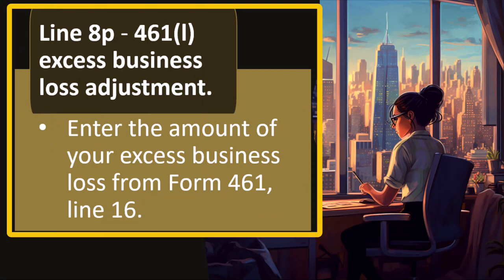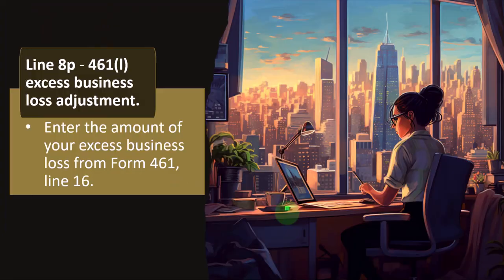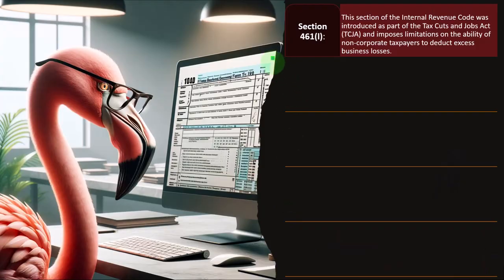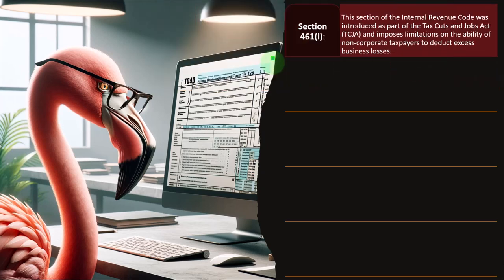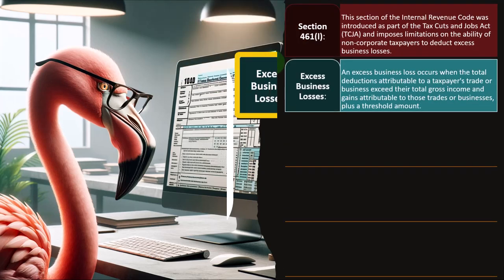Line 8P — Section 461(I) Excess Business Loss Adjustment. Enter the amount of your excess business loss from Form 461, Line 16. Section 461(I) was introduced as part of the Tax Cuts and Jobs Act and imposes limitations on the ability of non-corporate taxpayers to deduct excess business losses.